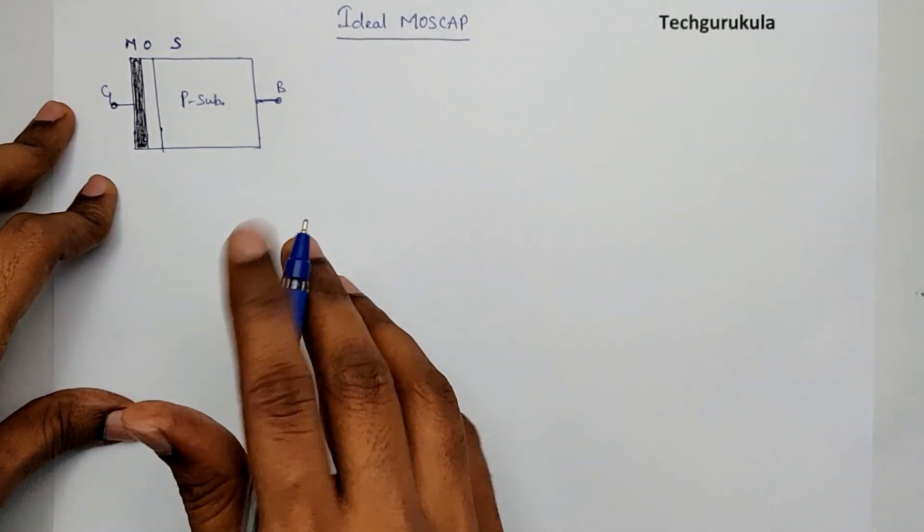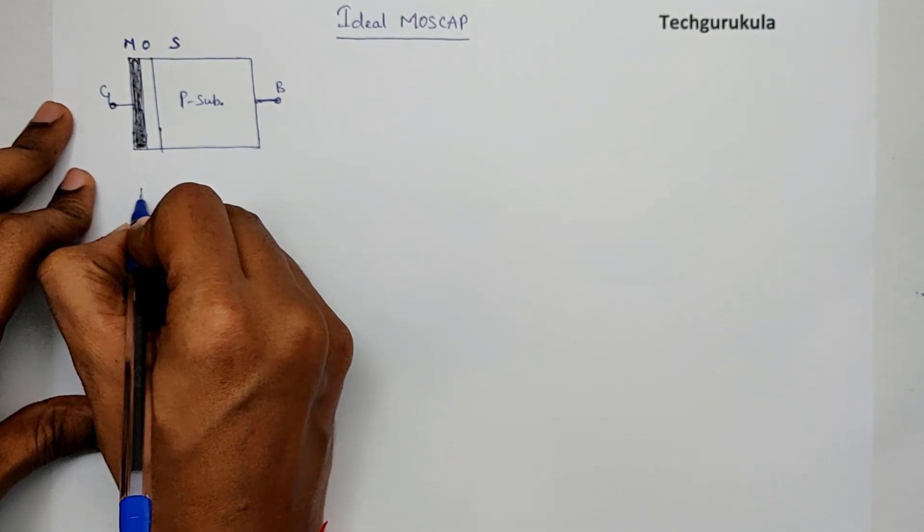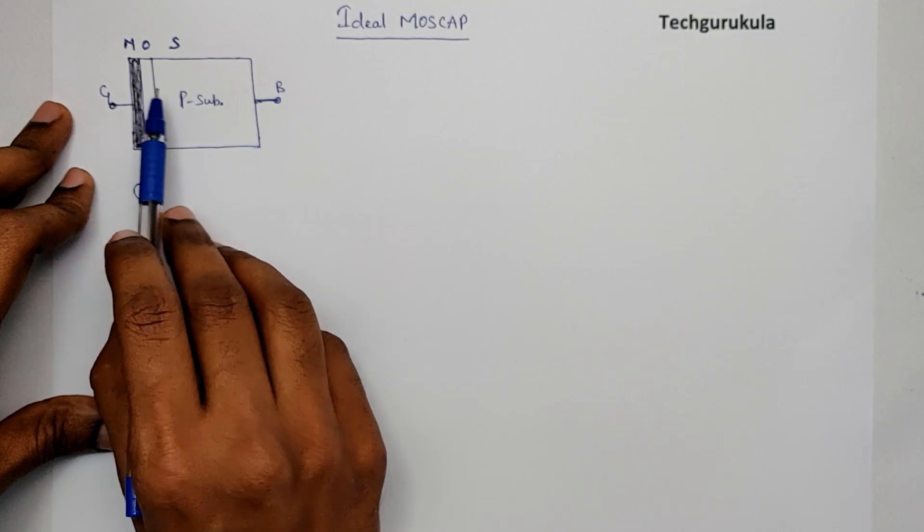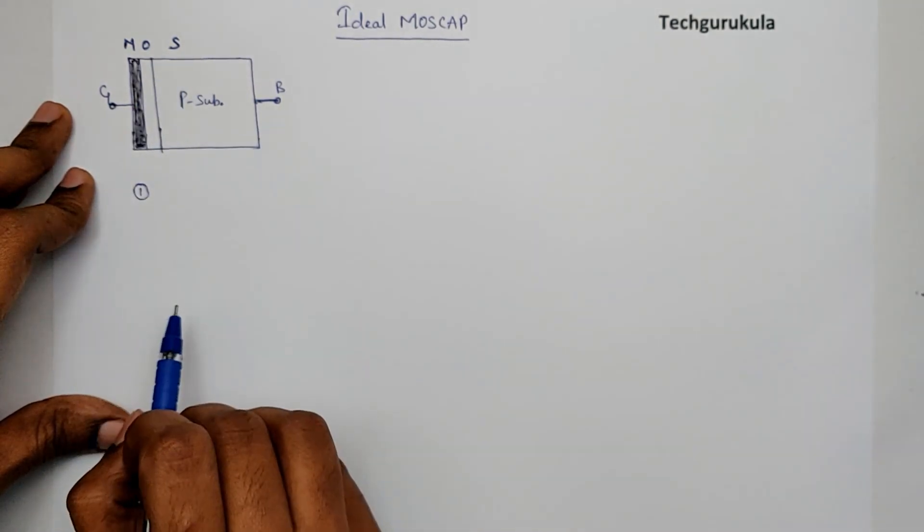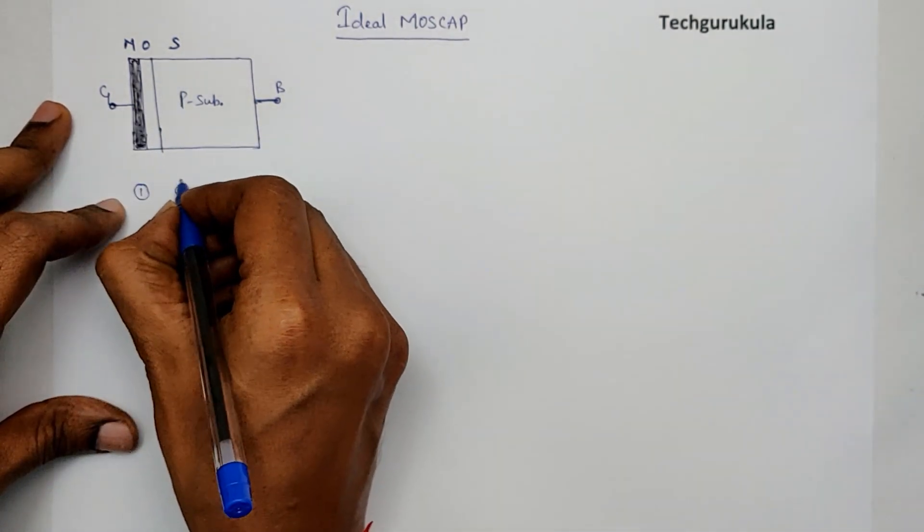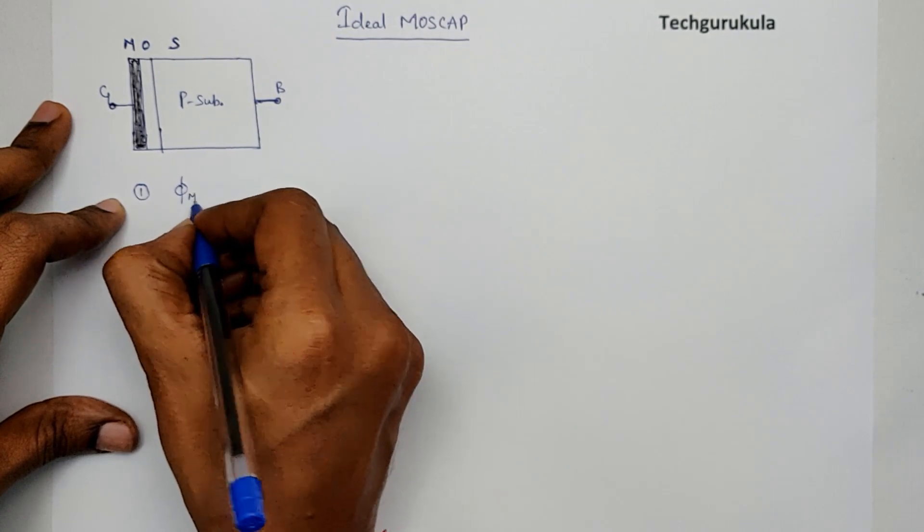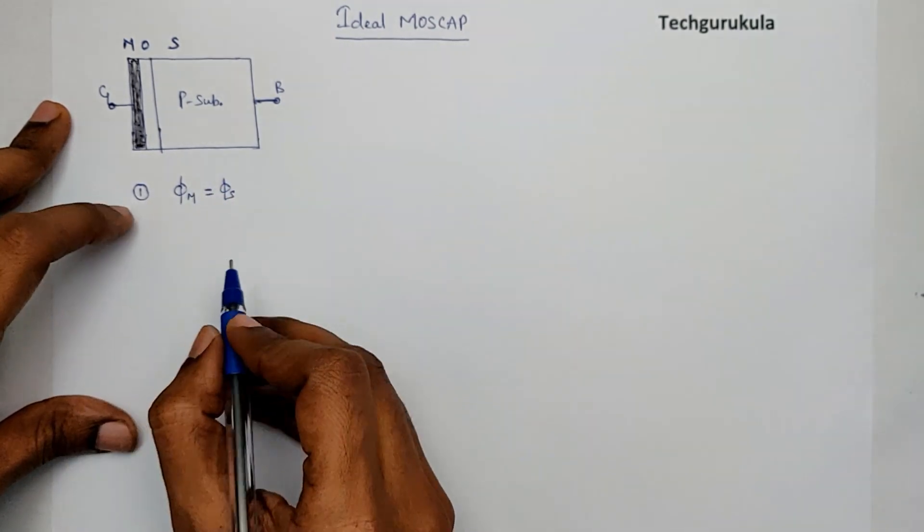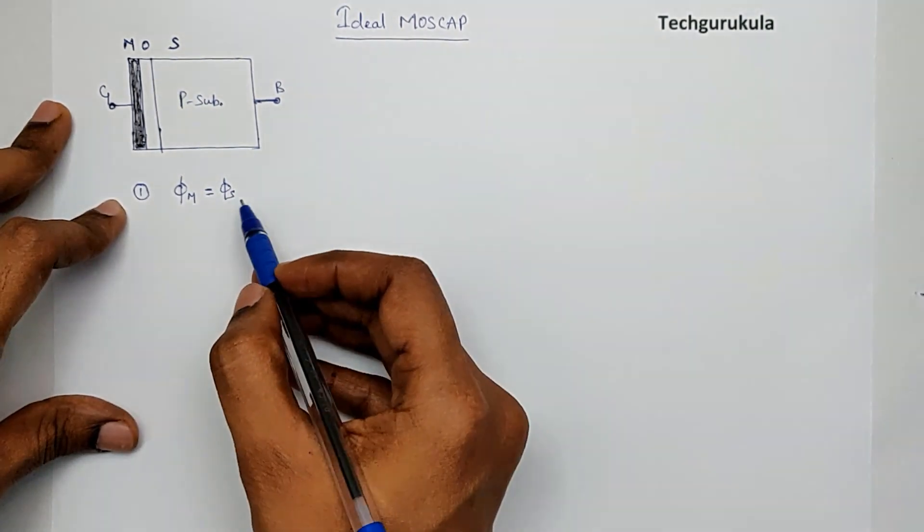The conditions that we're going to take are, number one, that the work functions of metal and semiconductor are same, which means phi M is equal to phi S. This is the first assumption that we're going to make for an ideal MOSCAP.